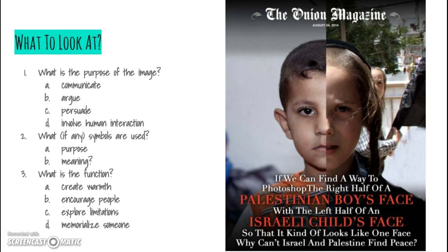I see it's from Onion Magazine, the date is 2014. I can see that it's a little child but they've made the child two faces of two different children and pressed them together. The text in big red capitalized letters reads 'Palestinian boy's face, Israeli child's face,' so we have the two religions. The full text reads: 'If we can find a way to Photoshop the right half of a Palestinian boy's face with the left half of an Israeli child's face so that it kind of looks like one face, why can't Israel and Palestine find peace?' So they're looking at trying to solve a world issue, more specifically a national issue between these two religions.